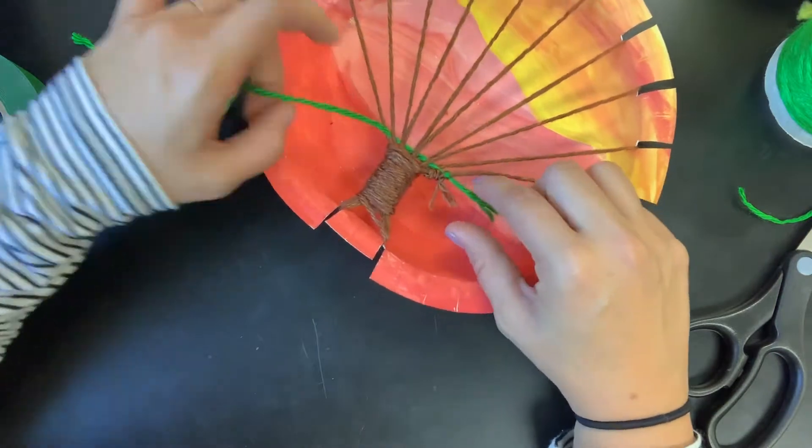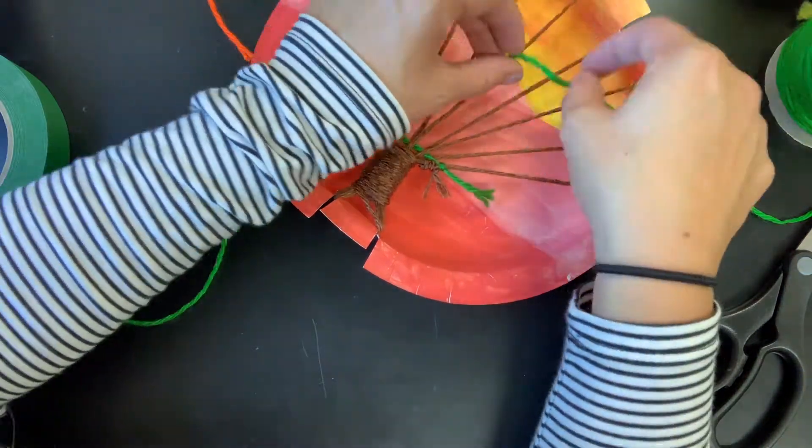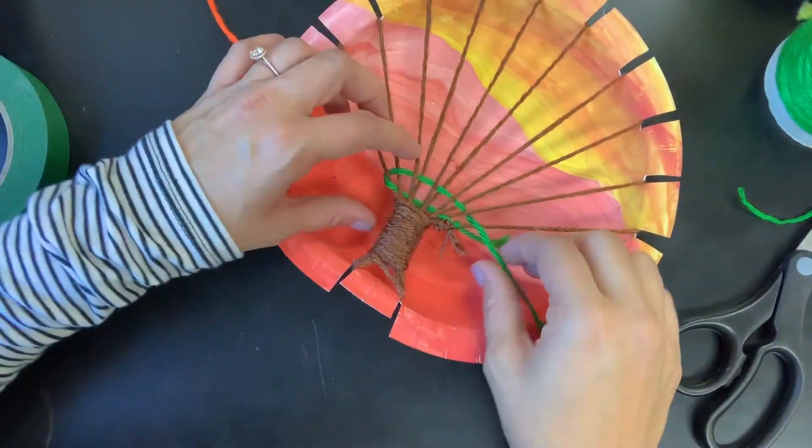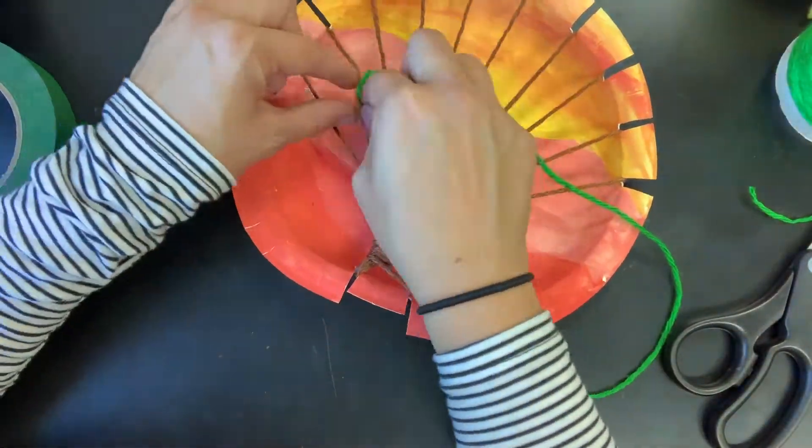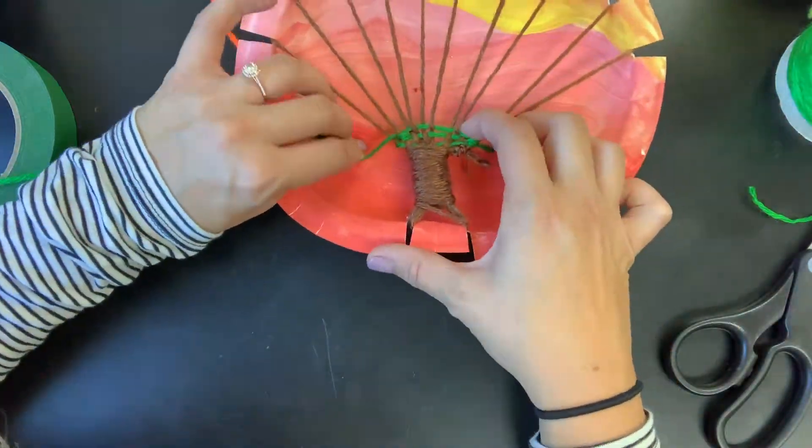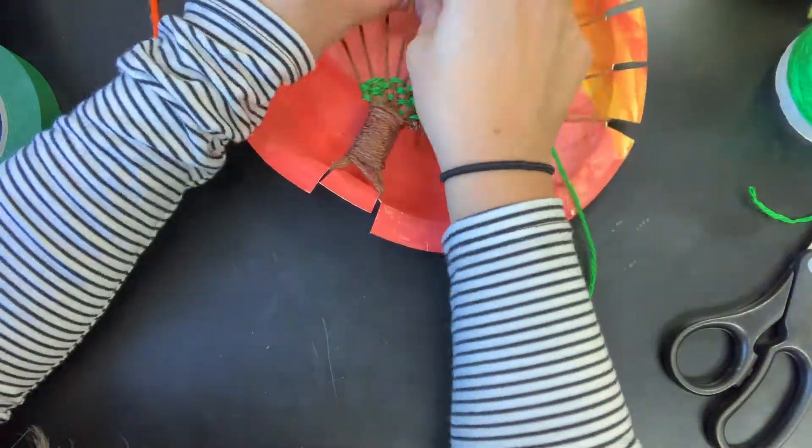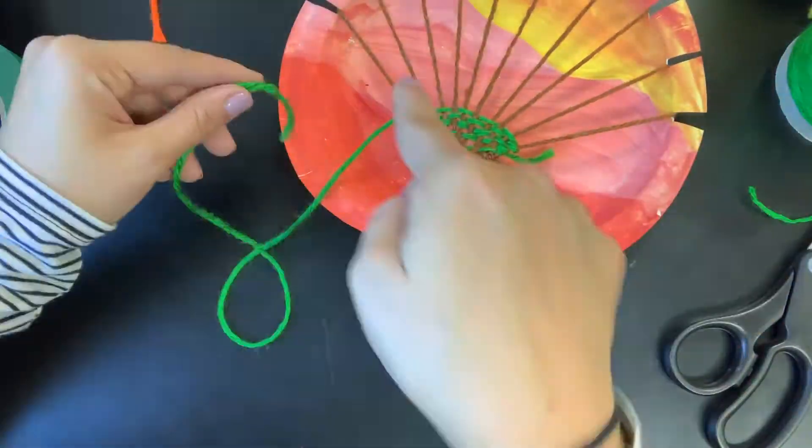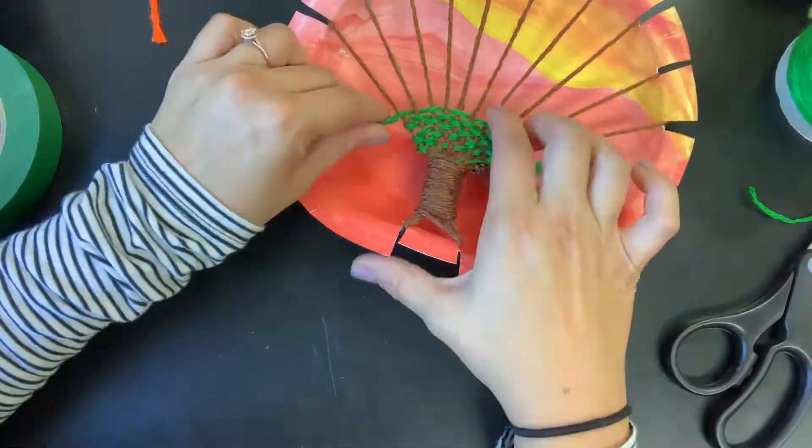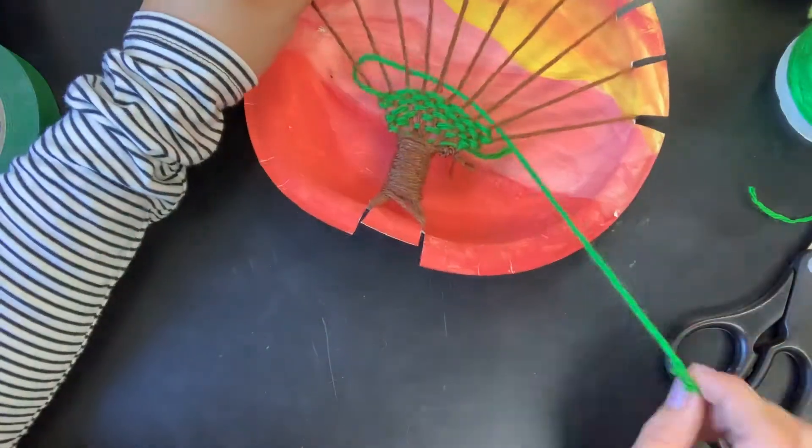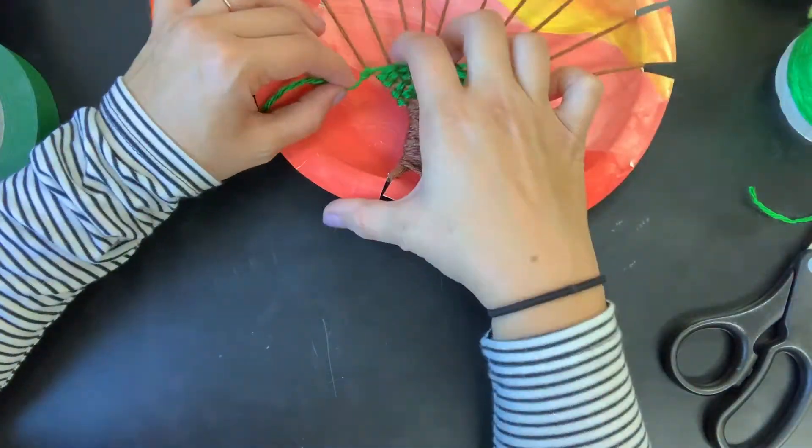Then keep weaving. I ended over so now I need to go under. Under, over, under, over, and then pull all the way through and continue this process until you run out of string.